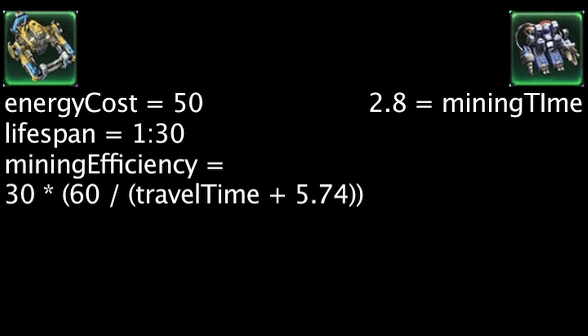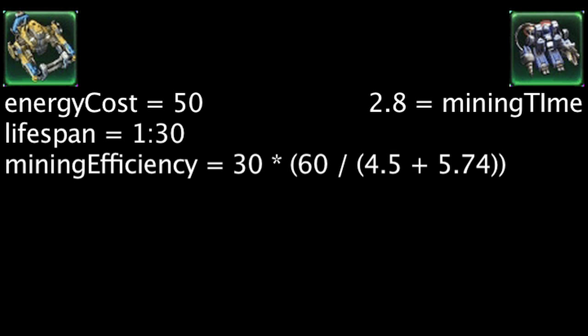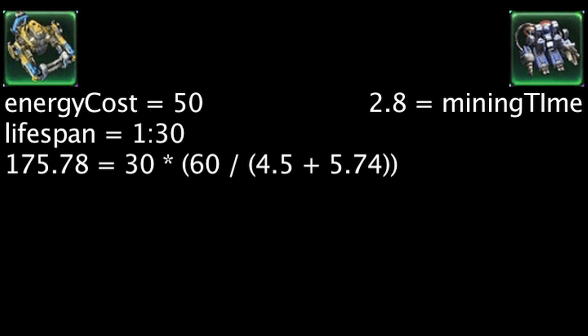A mule has the same movement speed as an SCV, making its travel time about 4.5 seconds and its mining efficiency 175.78 minerals per minute.